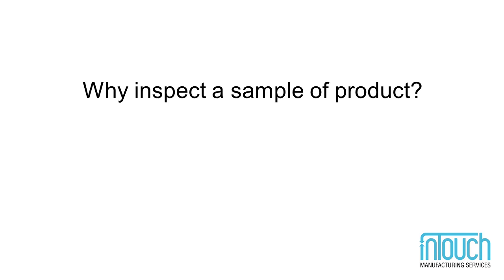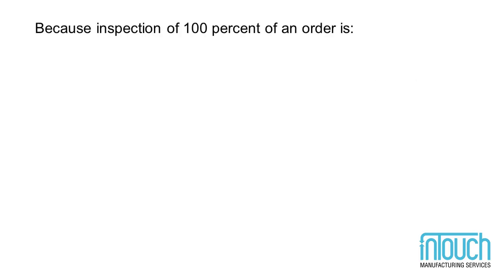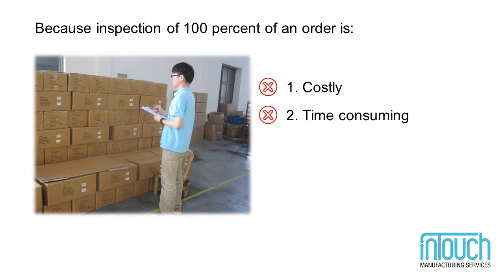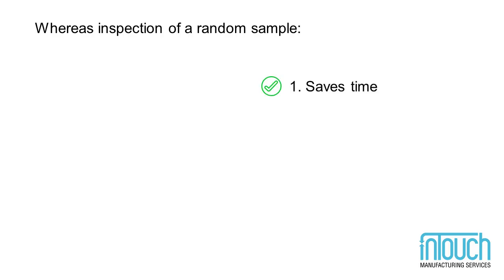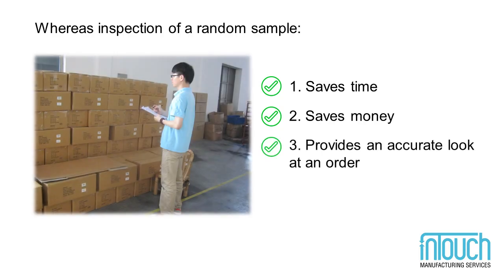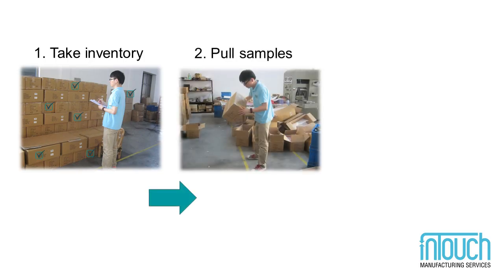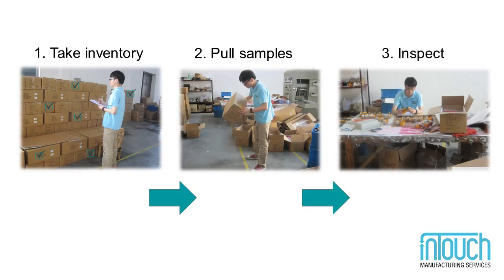Before we get into the details of AQL and how it's used for inspection, let's first look at why you might use sampling instead of inspecting 100% of an order. Inspection of 100% of an order is costly and time consuming, whereas inspection of a random sample of product saves time and money while still providing an accurate look at an order of goods. In this way, an inspector is able to take inventory, pull a random sample of goods, and inspect the units in the sample to report statistically significant findings.